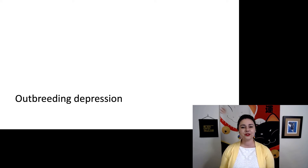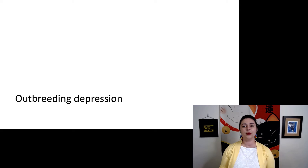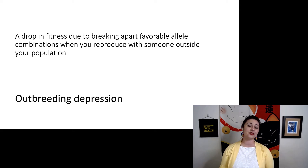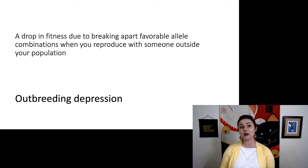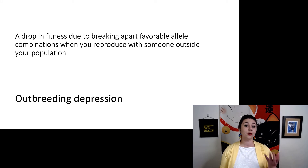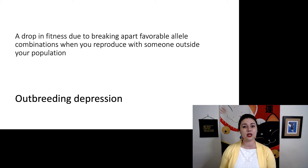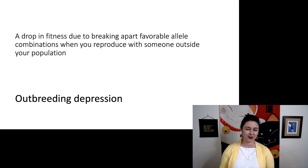Another interesting concept is outbreeding depression. Most people have heard of inbreeding depression, but outbreeding is the opposite — you can actually get a drop in fitness because you are breaking apart favorable allele combinations. Occasionally, if you reproduce with someone outside of your population, your children could have a drop in fitness.